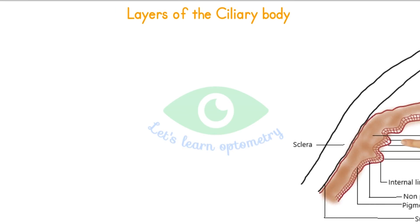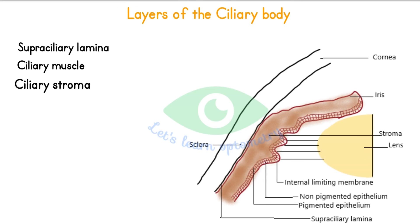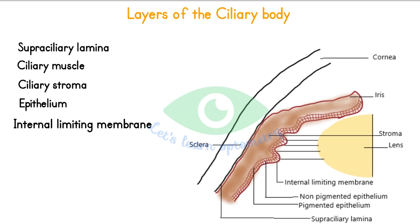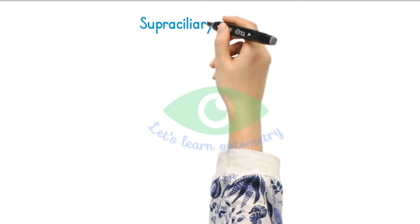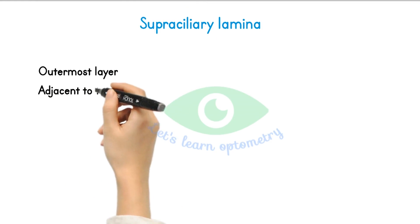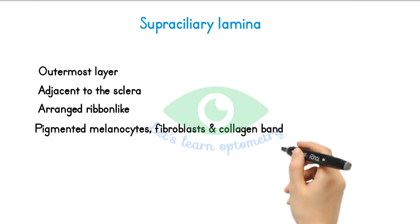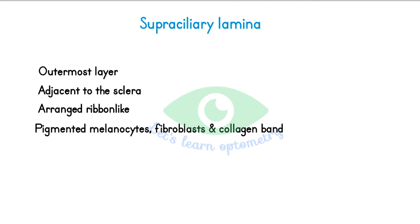Layers of the ciliary body. From outside to inside, the ciliary body has the following layers: the supraciliary lamina, the ciliary muscle, ciliary stroma, epithelium, and the internal limiting membrane. The supraciliary lamina, or supraciliaris, is the outermost layer of the ciliary body adjacent to the sclera. It is a loose connective tissue arranged in a ribbon-like pattern containing pigmented melanocytes, fibroblasts, and collagen bands. The arrangement of these bands allows the ciliary body to slide against the sclera without detaching from it or stretching the tissue.